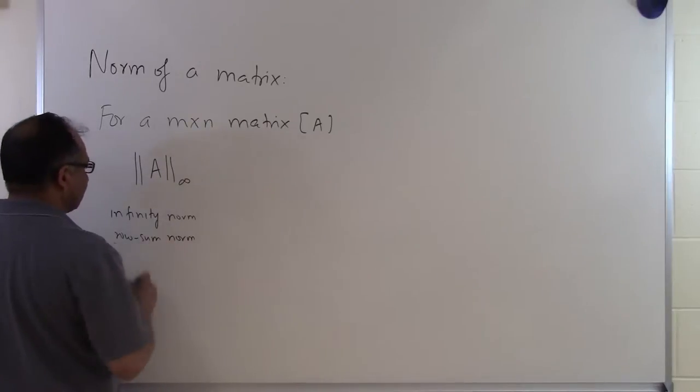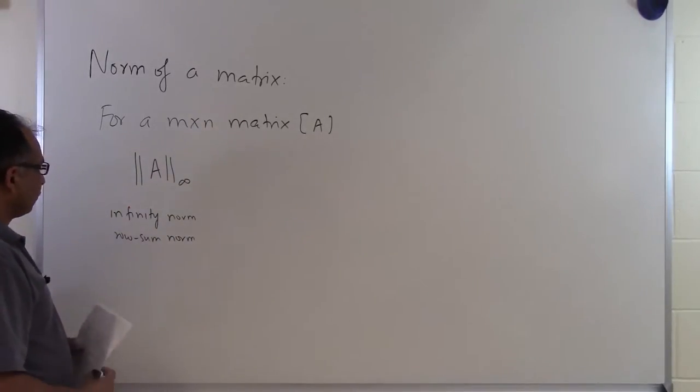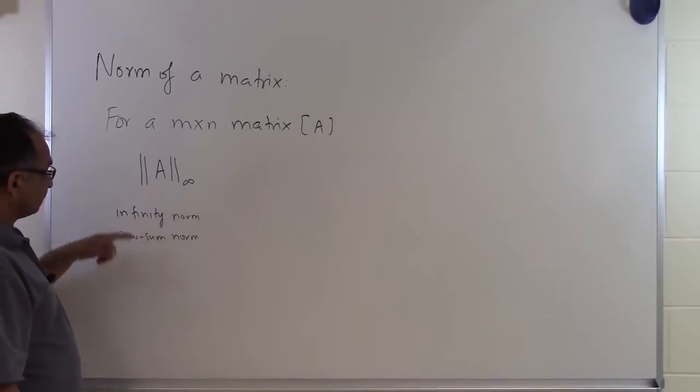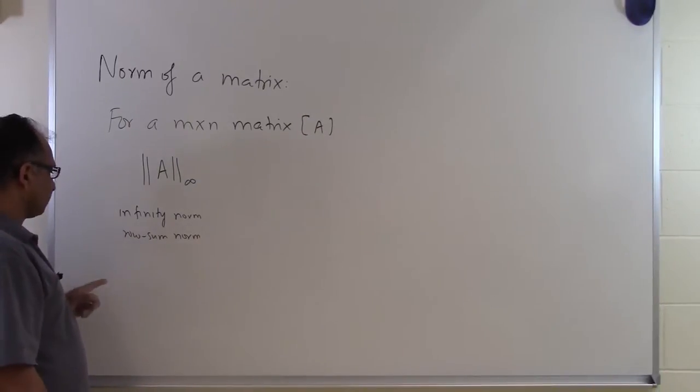There might be some other names for the same norm, but what you have to understand is that there are different types of norms. You might have a column sum norm, row sum norm, and so on. But in this particular course we are only limiting ourselves to the infinity norm because we need to use the norms to do other things. But if you are interested in finding what other norms are, you can always do that.